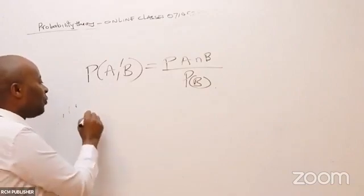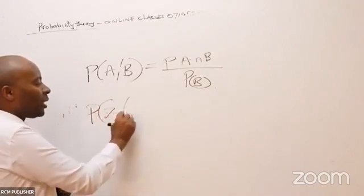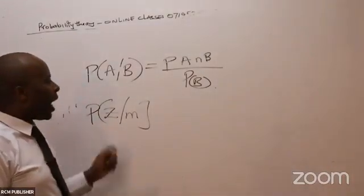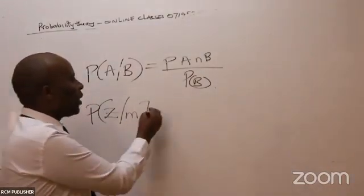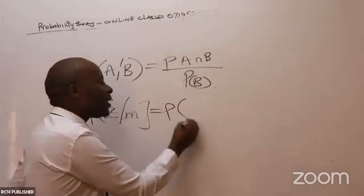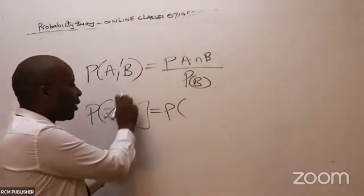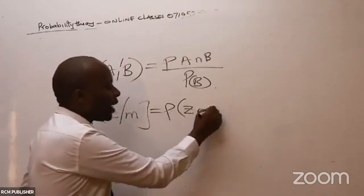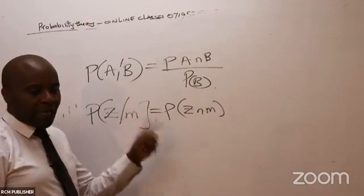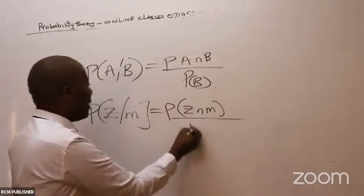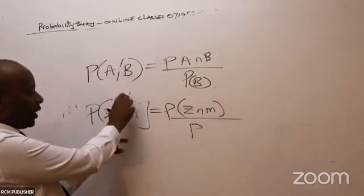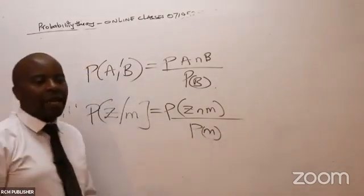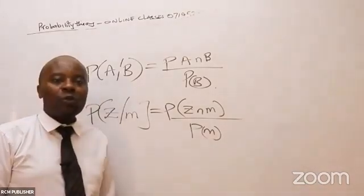On the same note, if somebody wanted us to calculate the probability of Z given M, what we shall do is: in the numerator we remove the stroke, so it will be probability of Z and M, divided by probability of M — the denominator event — all over probability of M.